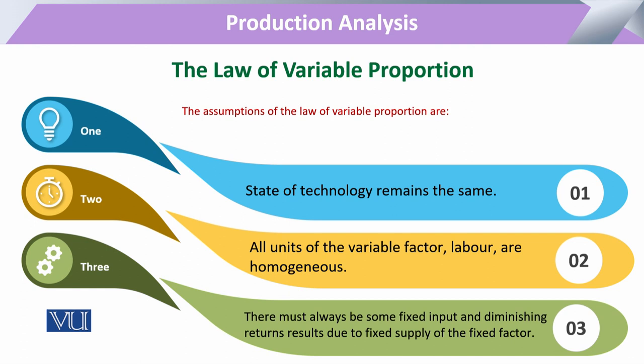Secondly, all units of variable input used over time should remain the same per unit of that input. For example, sometimes we use a good amount of input — like brake oil in a car or a technology unit. But over time, its quality becomes better and its efficiency improves, giving more output.